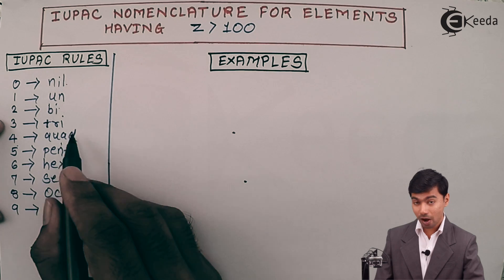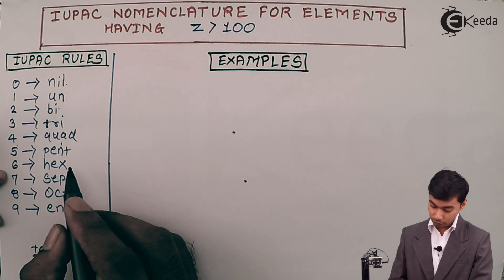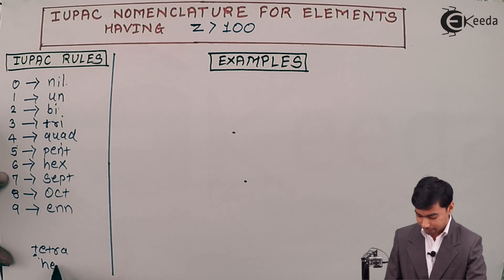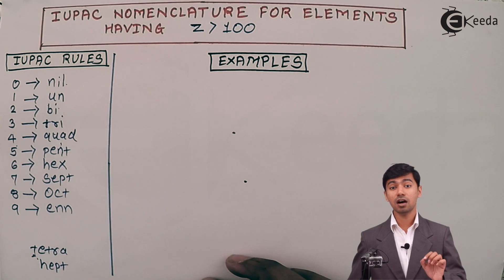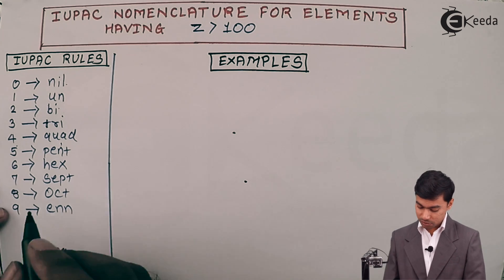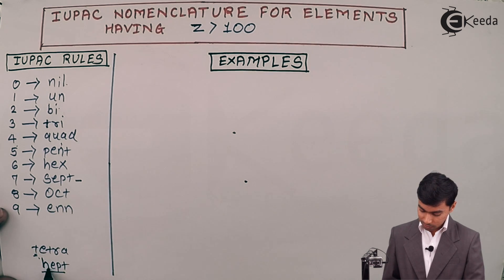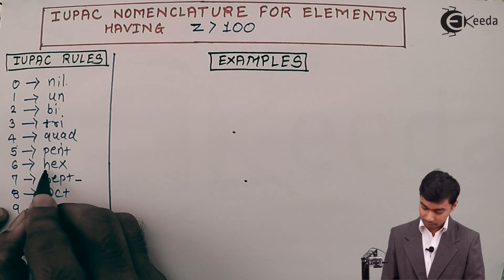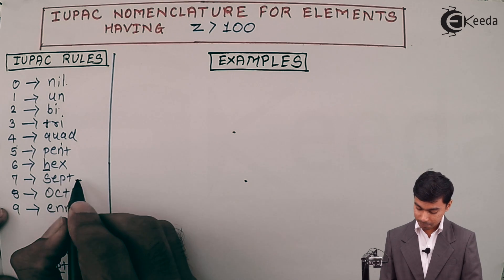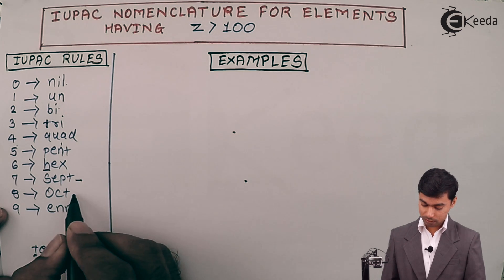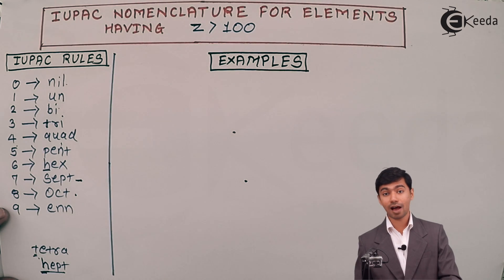For 5, it is 'pent'. For 6, it is 'hex'. For 7, they use 'sept' instead of 'hept' — because in organic chemistry we use 'hept' for 7, and 'hex' also starts with H, so to avoid confusion between H and H, we use 'sept' for 7. For 8, it is 'oct', and for 9, it is 'enn'.